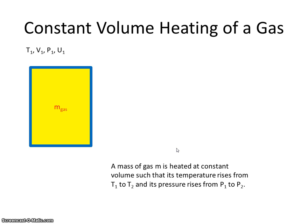So let's say we heat it so that its temperature rises from T1 to T2. Its volume is going to remain constant, therefore its pressure must change, so its pressure is going to rise from P1 to P2.